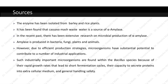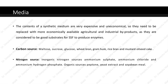Industrially important microorganisms are found within the Bacillus species because of their rapid growth rates leading to shorter fermentation cycles, their capacity to secrete proteins into the extracellular medium, and general handling safety. The contents of a synthetic medium are very expensive and uneconomical, so they need to be replaced with more economical agricultural and industrial by-products, which are considered good substrates for solid-state fermentation. Carbon sources for amylase production include maltose, sucrose, glucose, wheat bran, gram husk, rice bran and mustard oil seed cake. Nitrogen sources include inorganic sources like ammonium sulphate, ammonium chloride and ammonium hydrogen phosphate, as well as organic sources like peptone, yeast extract and soybean meal.